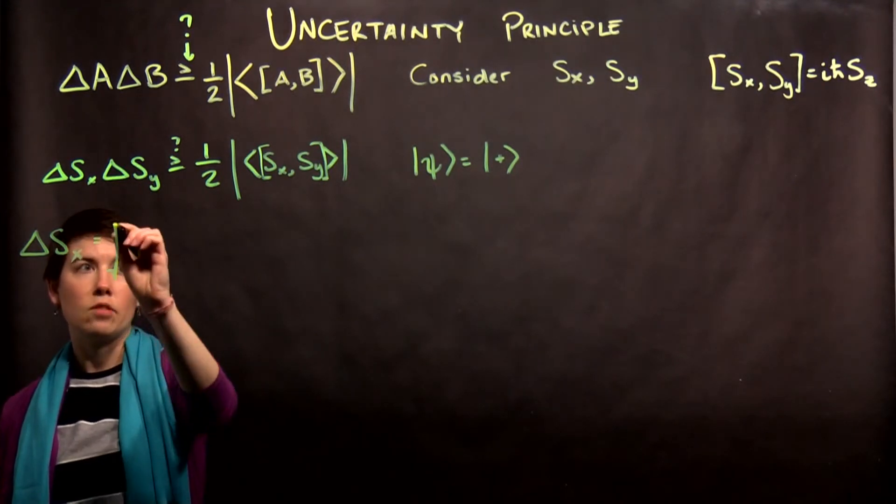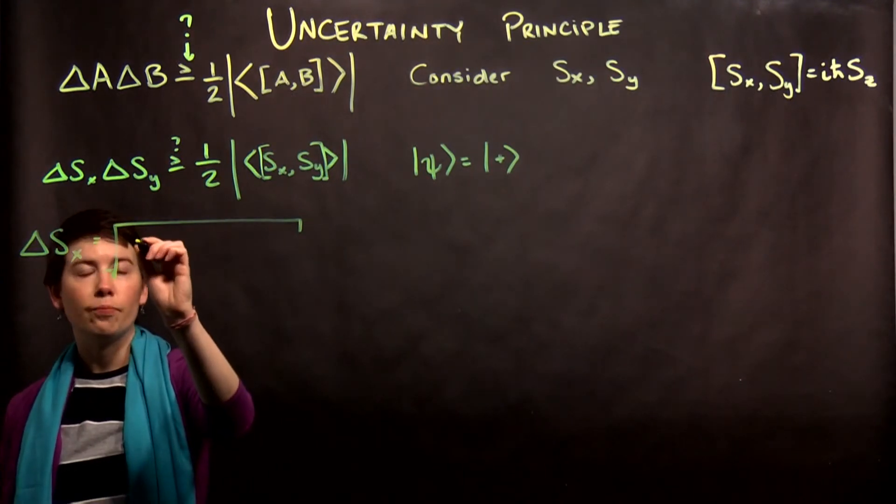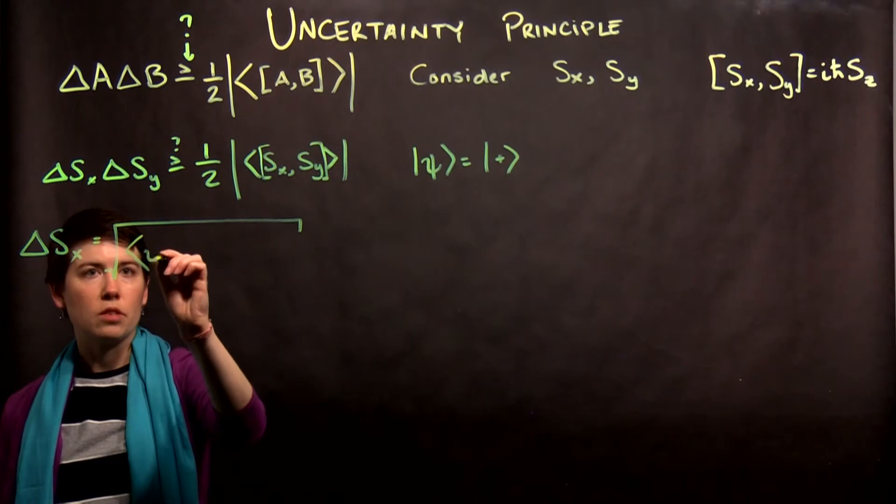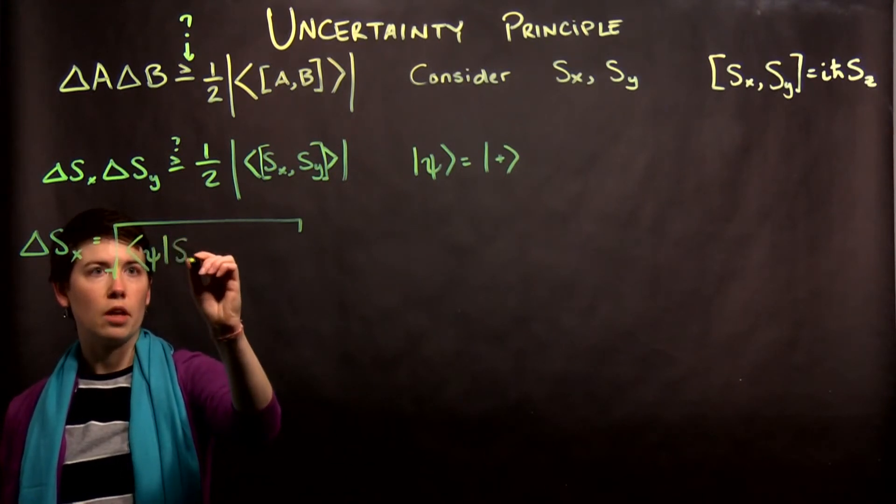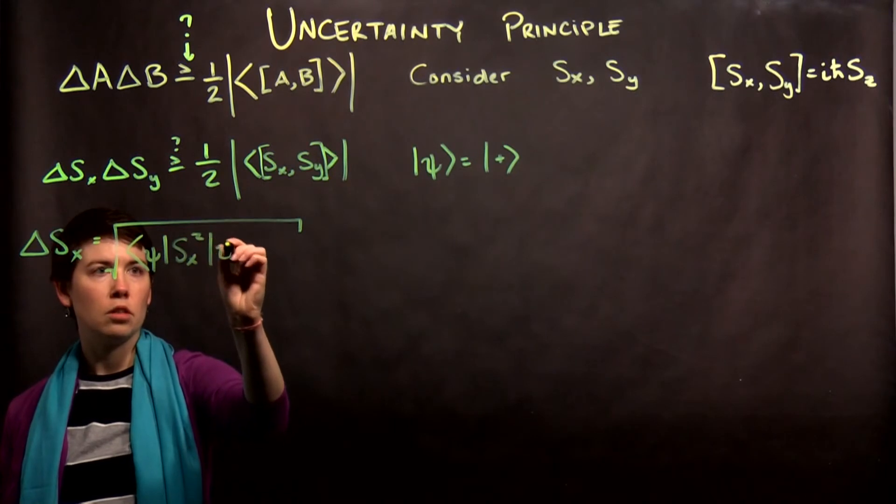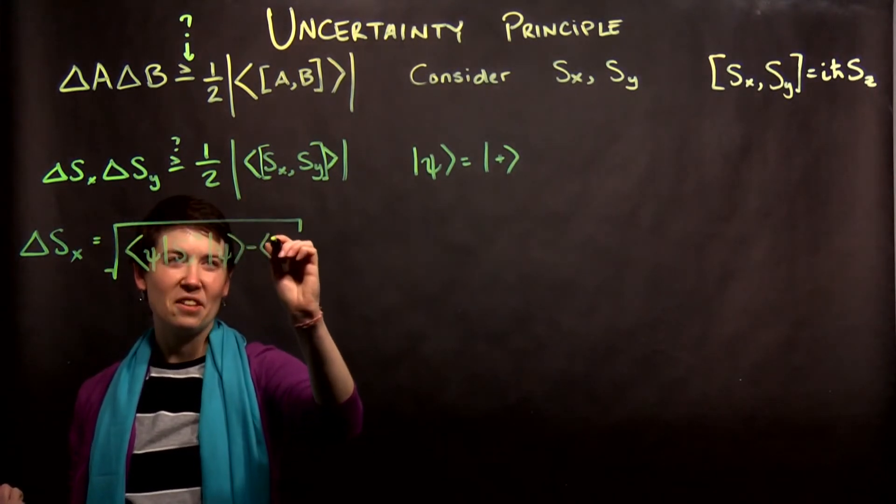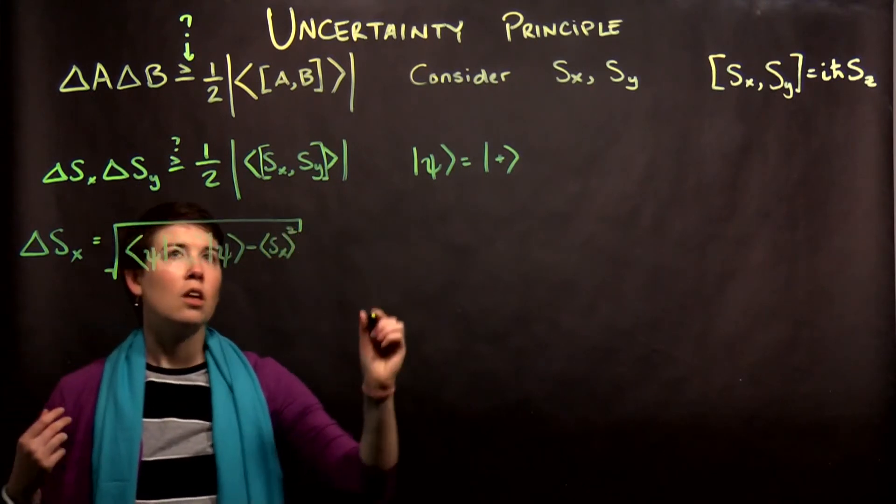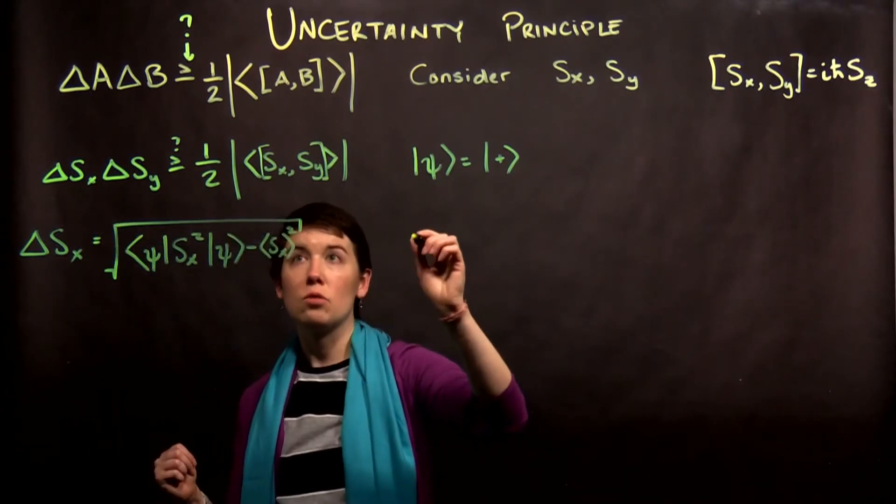and so that was going to be the expectation value of Sx squared, I haven't left enough room, minus the expectation value squared, but then the other thing that we know, and so that would also be for Sy then,